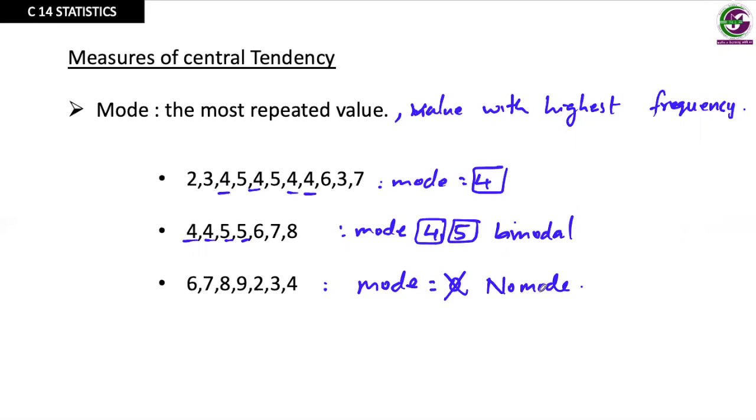In this case, nothing is repeated. Here mode is, don't write zero, no mode. We have to say no mode. And in this situation, 7, 7, 8, 8, 9, 9, we have 7 is a mode, 8 is a mode, 9 is a mode. So we have 3 modes here. These are all cases when we find mode.